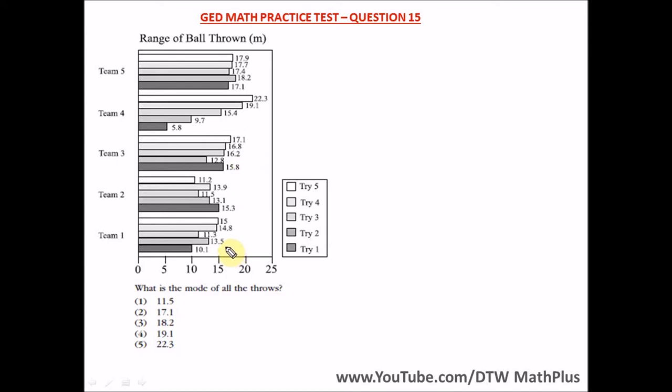We have to find which throw occurred frequently. We have 11, 10.1 - do we have a 10.1 anywhere? No. 13.5 do we have it anywhere? No. 11.3 - we don't have these values repeated.